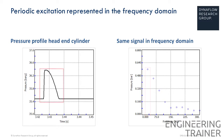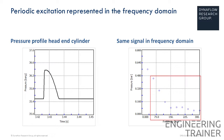However, the signal on the left does not look like a perfect sine, merely a deformed peak. So a combination of sine waves at higher frequencies is needed to reconstruct this time signal. Therefore, there are higher frequencies present.